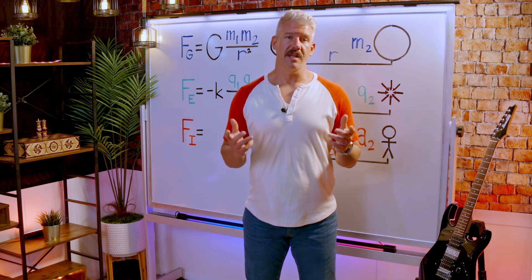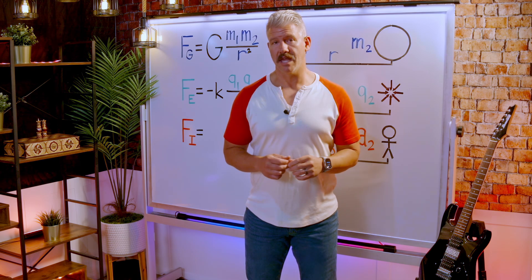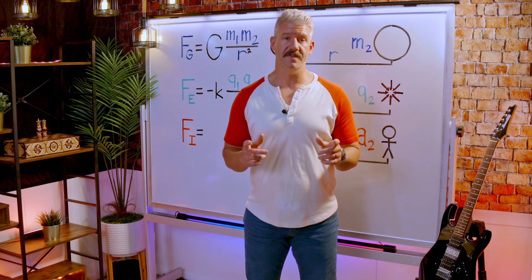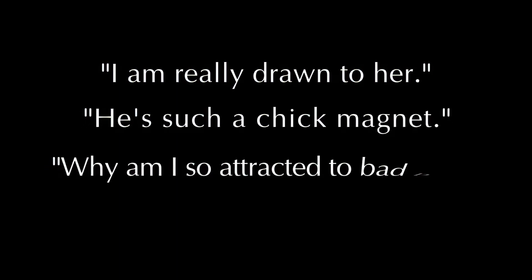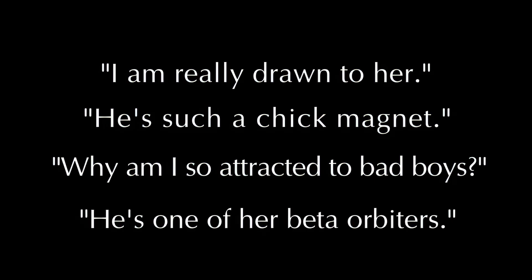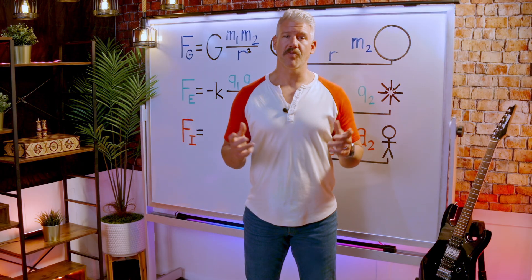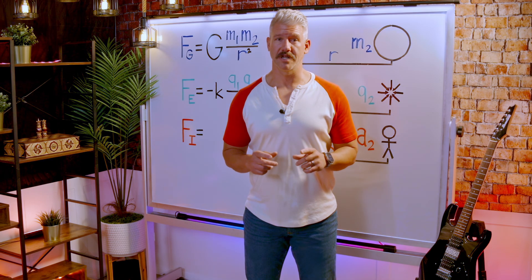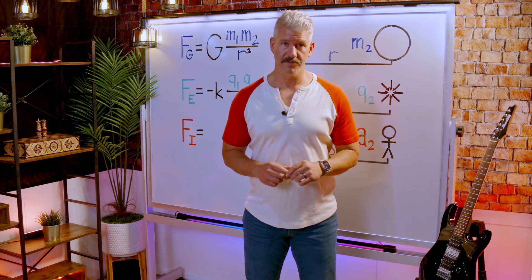We already use gravity and electromagnetism to describe our relationships in everyday language with phrases like: "I am really drawn to her," "He's such a chick magnet," "Why am I so attracted to bad boys?" and "He's one of her beta orbiters." These expressions reflect the underlying principles of attraction and repulsion that Slade's Law aims to quantify.